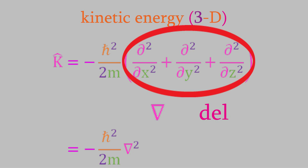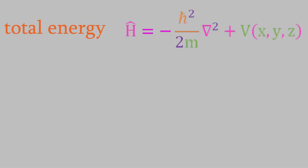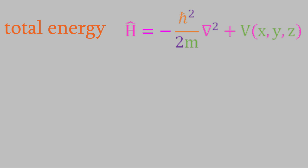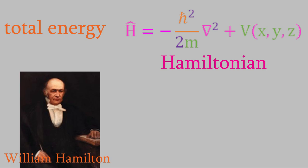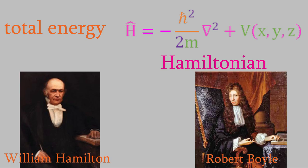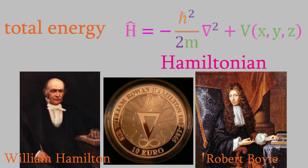The last operator we need to know about is the operator for the total energy of our system. That operator has the symbol h-hat. As you probably know, the total energy is just equal to the kinetic energy plus the potential energy. So, that looks like this, where the potential energy has the symbol V and is a function of the variables x, y, and z. We'll be using this operator quite a bit in future videos, so you'll want to try to remember it as soon as you can. The reason why the operator has the symbol h-hat is because it's called the Hamiltonian, after the Irish mathematician William Hamilton, who discovered the connections between the mathematics of momentum and position. Along with Robert Boyle, he's one of Ireland's most influential scientists, and he was even honored by a commemorative euro coin that has his name and the del symbol on it.